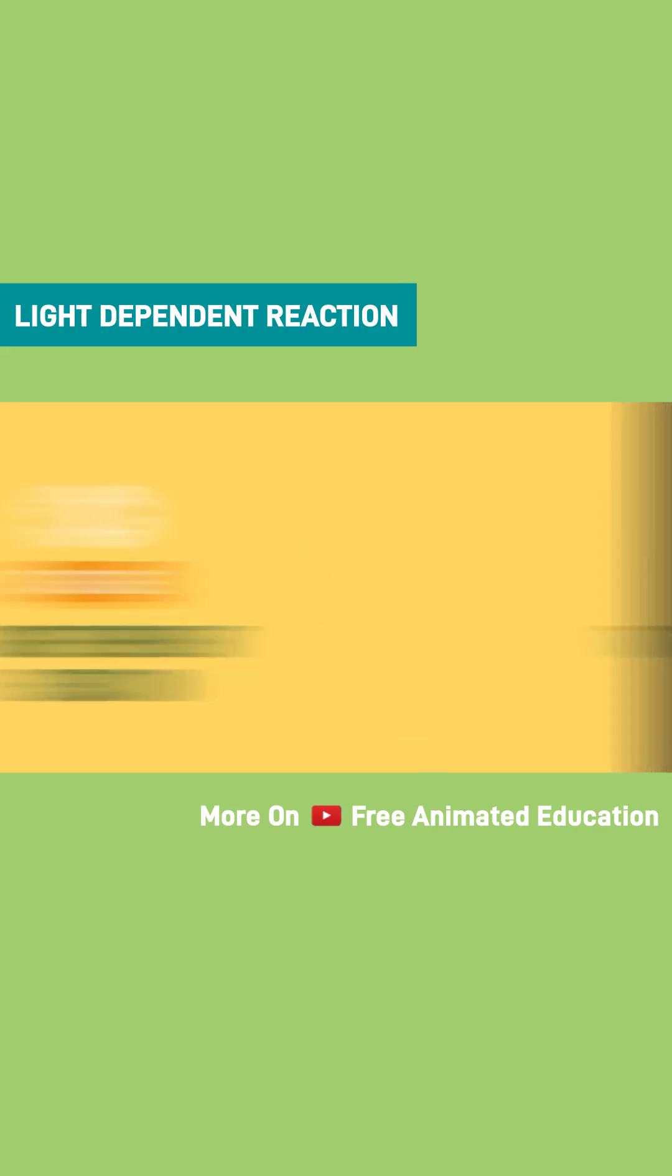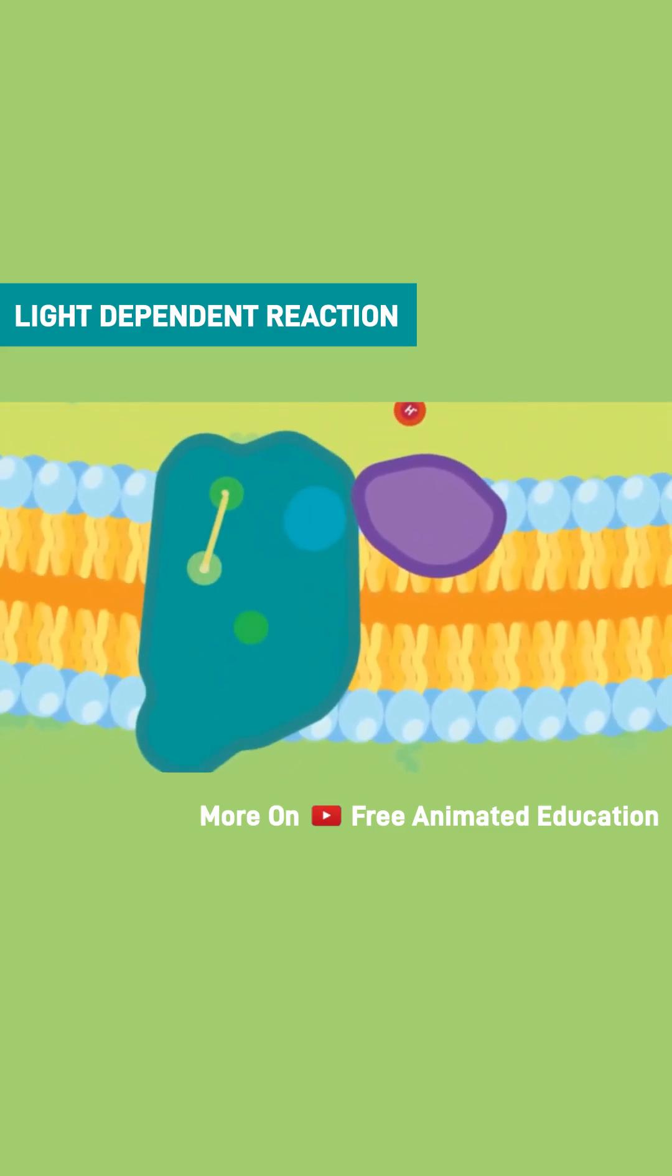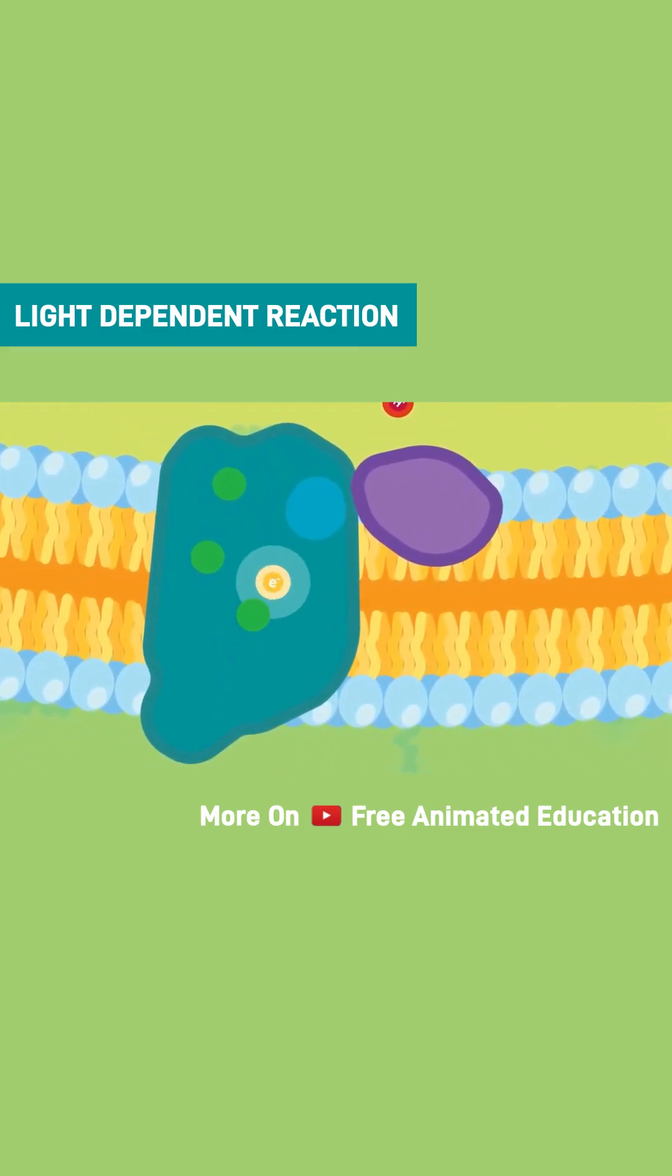Light-dependent reaction. It starts when photons from sunlight strike the leaf, excite the chlorophyll and activate electrons.